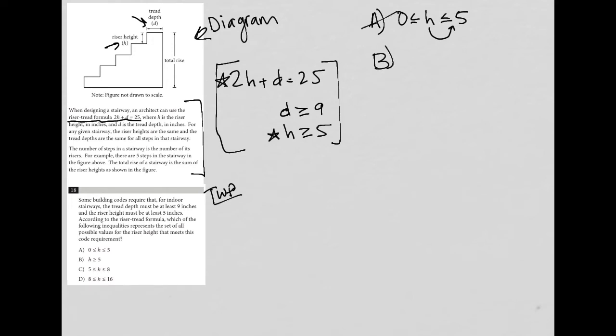Choice B, which actually says H is greater than or equal to 5, is going to be a very tempting answer for a lot of students because it matches what we see here. But it's actually not going to be the correct answer for this question. Here's how you know. The question asks for the set of all possible values for the riser height. If H is greater than or equal to 5, that's a lot of numbers. There's a lot of numbers that are greater than or equal to 5. So if I were to, for instance, say, let's say H is equal to 100.